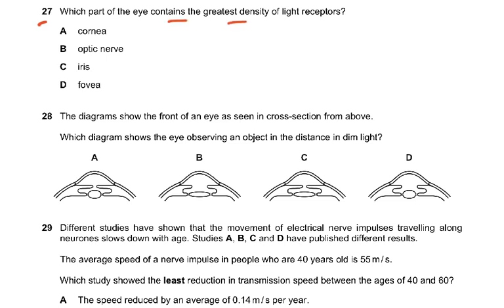Which part of the eye contains the greatest density of light receptors? The answer is D — the fovea. The retina is the broader part, but the fovea is where the density of light receptors is at its maximum. It is not the cornea, optic nerve, or iris — it is the fovea.